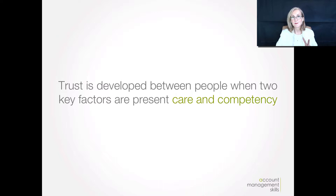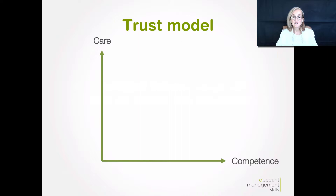Peter Schultz said that there had to be two things present for trust to be there: one is care and one is competency. He developed a trust model that I'm going to show you here. On the y-axis we've got care, and on the x-axis we've got competence. So fundamentally, if you're demonstrating a low level of care and a low level of competence, really all there is is distrust — which is something you really don't want with your client-agency relationship.